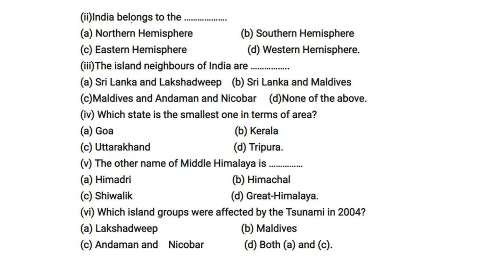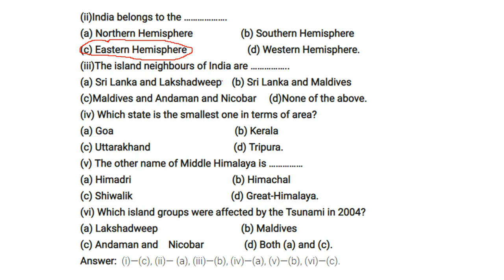India belongs to the eastern hemisphere. The island neighbors of India are Sri Lanka and the Maldives — islands that have sea around them. The smallest state in terms of area is Goa. The other name of the middle Himalayas is Himachal. The island group affected by the tsunami in 2004 was the Andaman and Nicobar Islands.